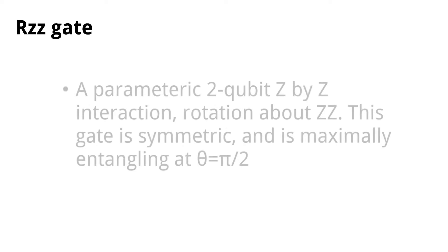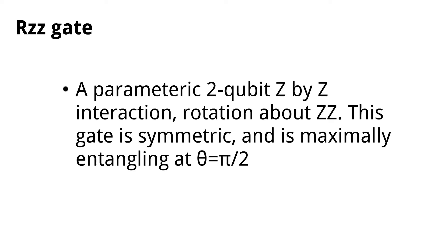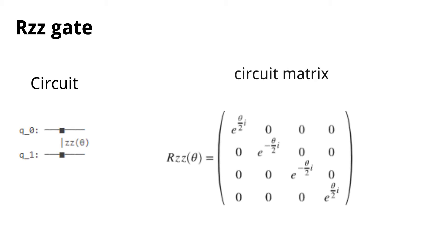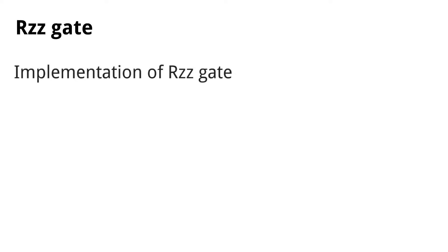Now let us move on to the next gate, that is the RZZ gate. The RZZ gate is a parametric two-qubit Z-by-Z interaction rotation about ZZ. This gate is symmetric and is maximally entangling at theta equals pi over 2. The circuit of the RZZ gate is as given below, and its matrix is as given below.